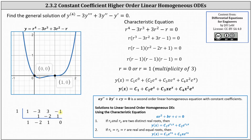Because one is a root, we have a one on the left, and then we perform synthetic division. We bring down the one, multiply by the root of one — one times one is one — and then we add vertically. Negative three plus one is negative two, multiply by one again gives negative two, add to get positive one, multiply by one again, add, we get zero. So the result one, negative two, one represents the factor r squared minus two r plus one, which factors again, giving us r times three factors of r minus one. This indicates the roots are zero and one, where one has a multiplicity of three.